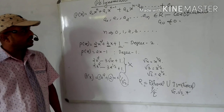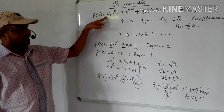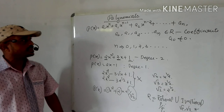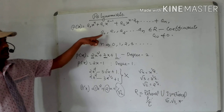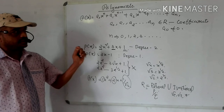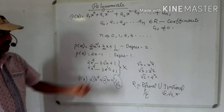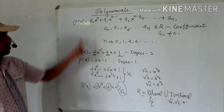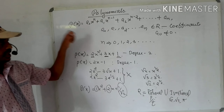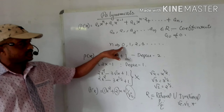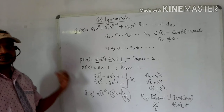To recap: an nth degree polynomial p(x) = a₀xⁿ + a₁xⁿ⁻¹ + a₂xⁿ⁻² + ... + aₙ where a₀, a₁, ..., aₙ are real numbers (the coefficients), a₀ ≠ 0, and n is a non-negative integer (0, 1, 2, 3, ...).